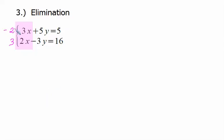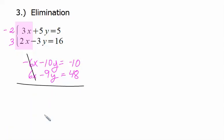Now multiply everything in that top equation by negative 2. Don't forget to multiply that right-hand side as well. Same thing in the bottom equation, multiply everything this time by 3, including 3 times 16 is 48. Then we add our equations. Negative 6x plus 6x, they cancel, it's eliminated. Negative 10y minus 9y will be negative 19y. And negative 10 plus 48 is 38.